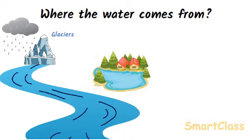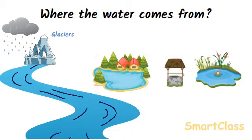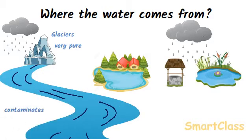Lakes, ponds and wells get their water from rains. Thus, the two major sources of water on land are glaciers and rains. The water formed by melting of glaciers is very pure in the beginning but it gets contaminated with impurities when it comes in river.